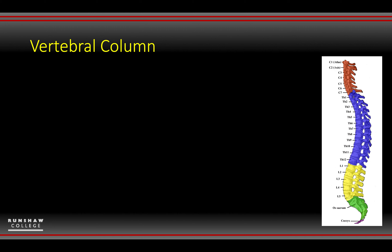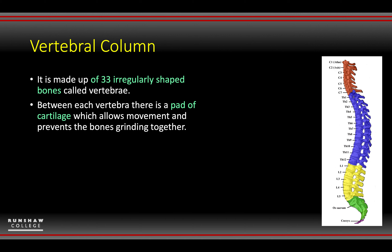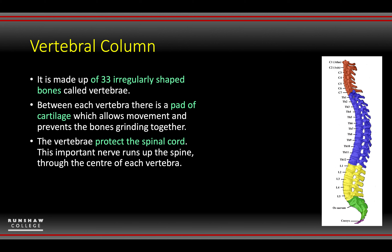Onto the vertebral column. Looking at the five different sections, you've got 33 irregular-shaped bones with a bit of cartilage in between each one, which allows smooth movement as well as a little pressure compression to take the weight off. We also protect the spinal cord — the main nerve runs right down the middle and branches out through small holes to various parts of the body, allowing electrical activity and movement.